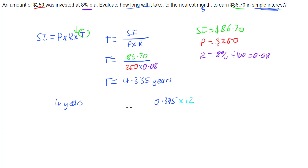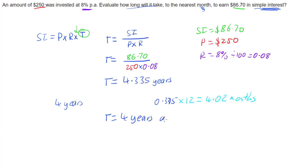To do that, we multiply 0.335 by 12, which tells us how many months we have. Putting that into our calculator gives us 4.02 months. We were asked to the nearest month, so rounding gives us 4 months — making our total time 4 years and 4 months.